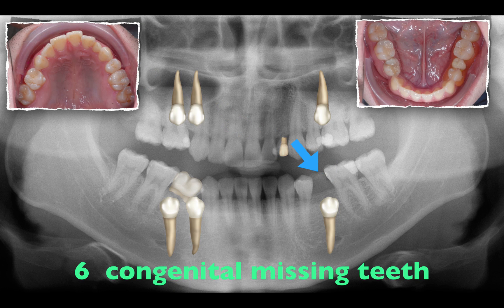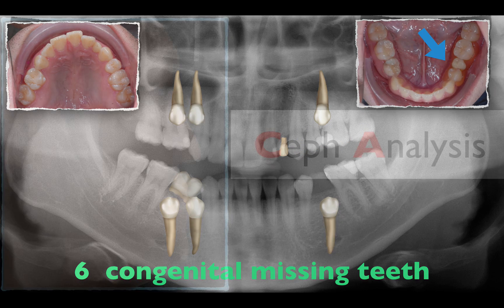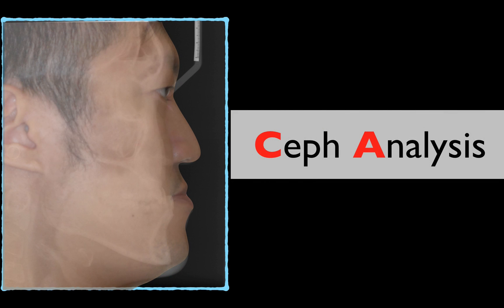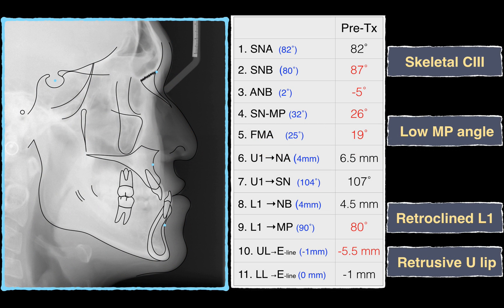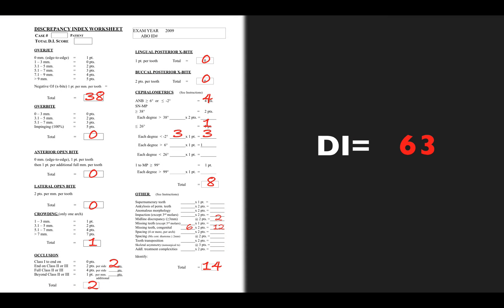There was one anterior space over the lower left side, but it was occupied by a single fluid. The cephalometric analysis showed that the patient had a skeletal Class 3 discrepancy, low mandibular plane angle, retroclined lower incisors, and retrusive upper lip. The DI score was 63.